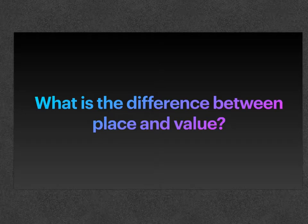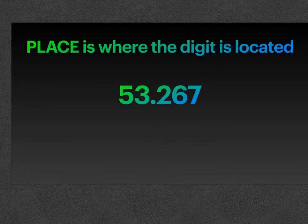In this video we will be identifying the difference between place and value. The place is where the digit is located in the number. So in this number, 53 and 267 thousandths, there are five places that have digits in them.